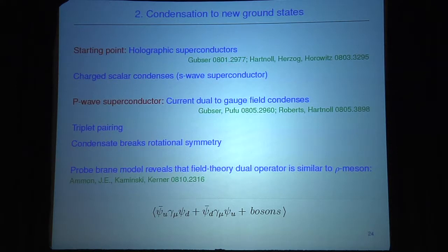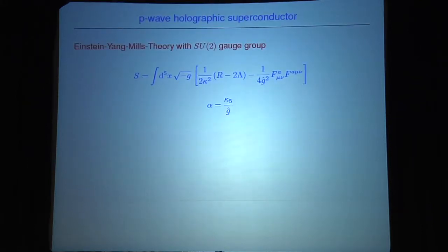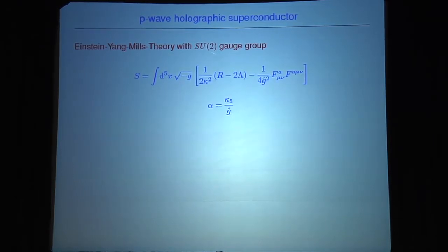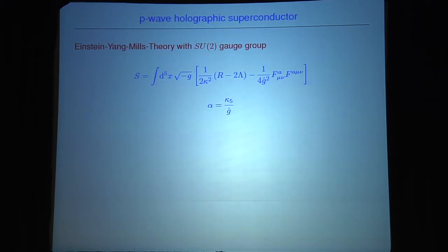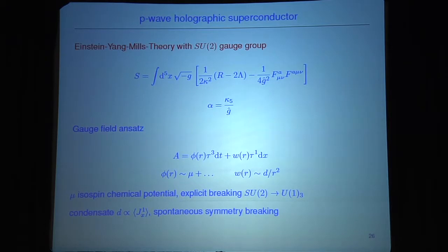Looking at this with a probe brane model, we find the field theory dual operator is similar to the rho meson. Let me look at these p-wave superconductors. We start with Einstein-Yang-Mills theory with an SU(2) gauge group in a bottom-up approach, involving a Ricci scalar cosmological constant and SU(2) gauge fields. We also introduce the coupling α which is the ratio of the gravitational and gauge coupling. We make a particular ansatz for the gauge field involving a τ_3 Pauli matrix and a τ_1 Pauli matrix with two radially dependent fields.